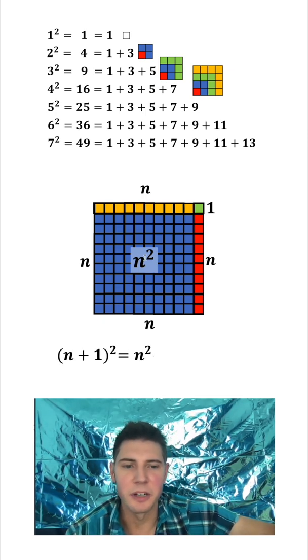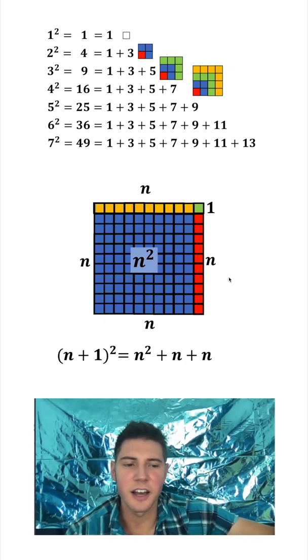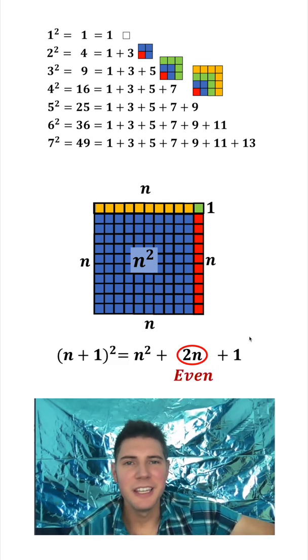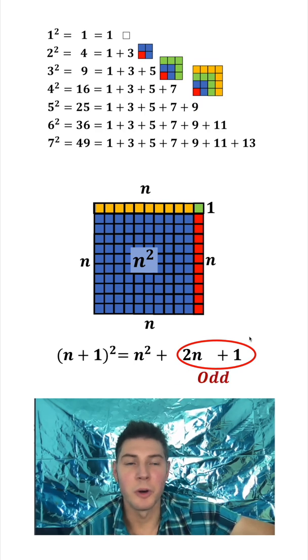Now this n + n is 2n and we know that 2n has to be even and more importantly 2n + 1 has to be odd.